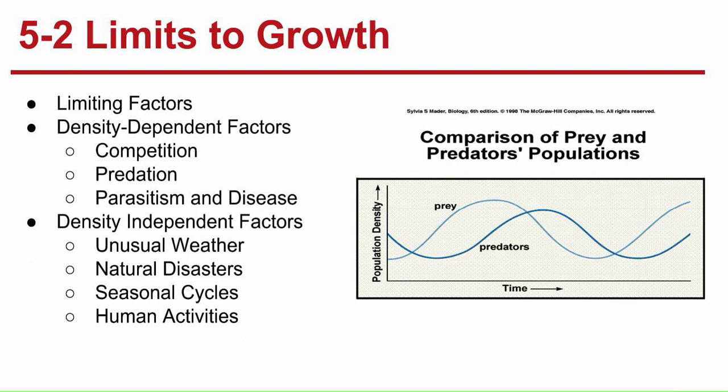Next are density-independent factors. These affect all populations in similar ways, regardless of size. This includes unusual weather such as tornadoes, heavy rainfall, droughts, natural disasters, forest fires, earthquakes, and volcanoes. Seasonal cycles — going through spring, we see an increase in populations with all the new individuals. And certain human activities, such as logging and damming, which usually result in a decrease of individuals' populations.